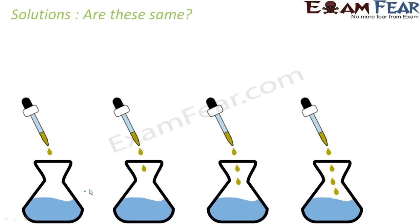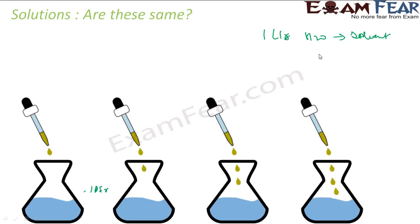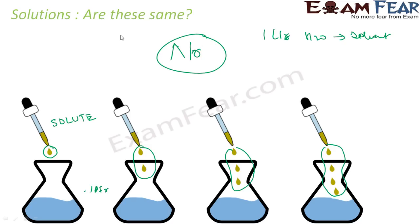In all these, let's suppose we have taken 1 liter of water — that is my solvent. But the solute is varying. Here I have 1 drop of solute, here 2 drops, here 3 drops, here 4 drops. So if you make solutions of these scenarios, are these the same? No. And what is the difference?